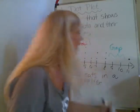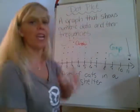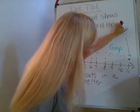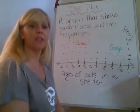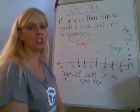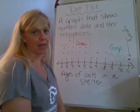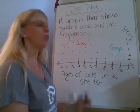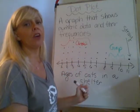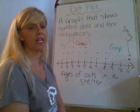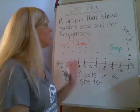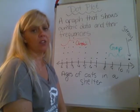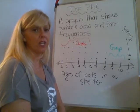Then there's this value way out here all by itself — the only one in that area. This is called a stray value or an outlier. So when looking at data and graphs, we ask: where do we see a cluster, where do we see a gap, and are there any stray values or outliers? These are the vocabulary words we'll be using with dot plots, histograms, and box plots, which are in our next two videos.